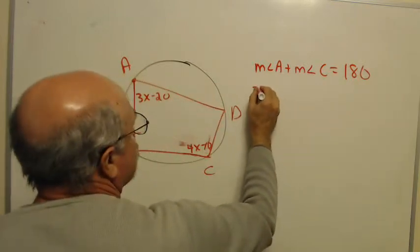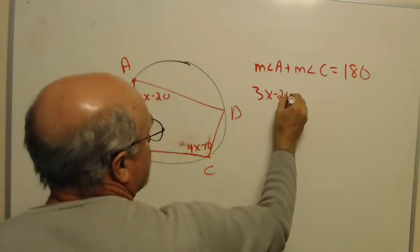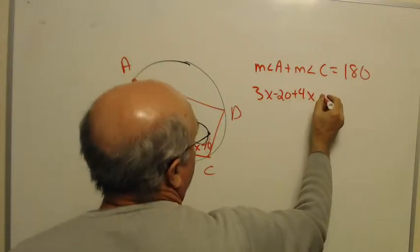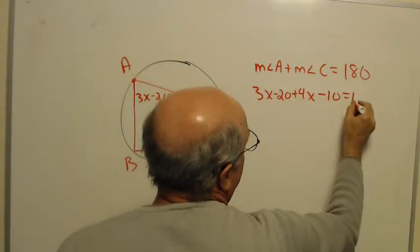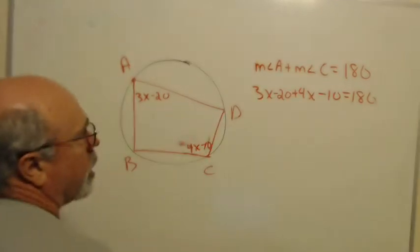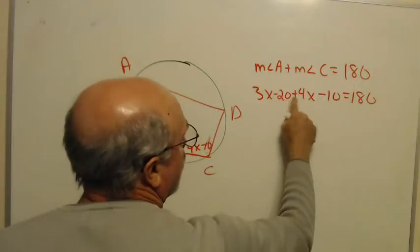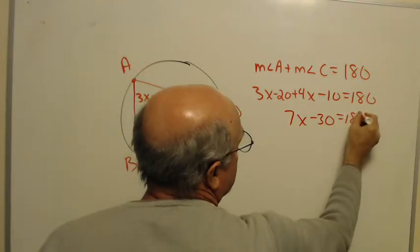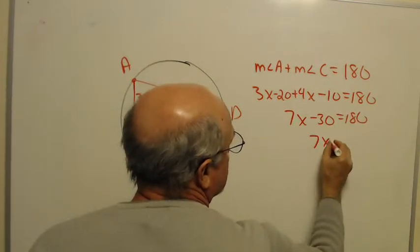That would be 3x minus 20 plus 4x minus 10 equals 180. So that's 7x minus 30 is 180. 7x is 210.